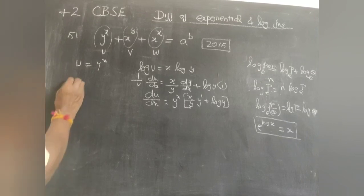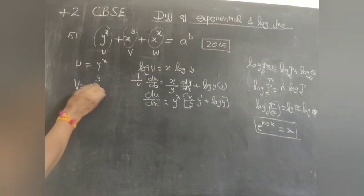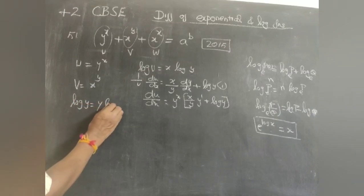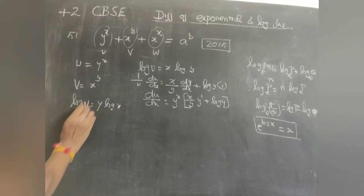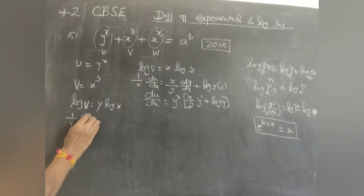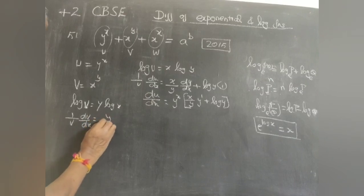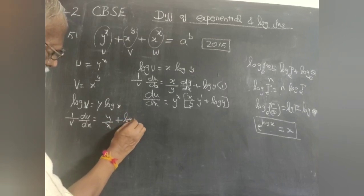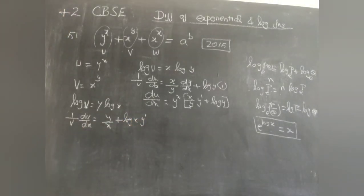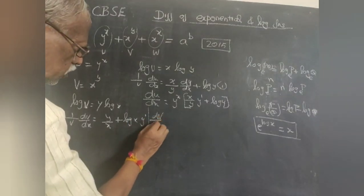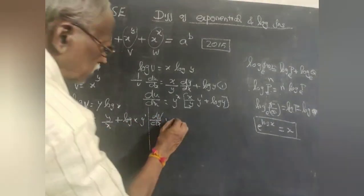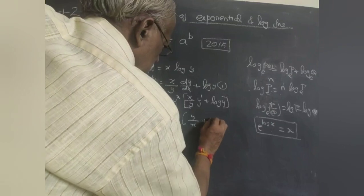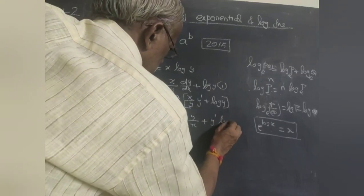For v = x^y: taking log on both sides, log v = y·log x. Differentiating: (1/v)·(dv/dx) = y/x + log x · y'. Therefore dv/dx = x^y · [y/x + y'·log x].